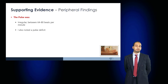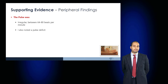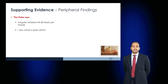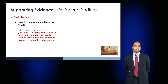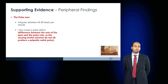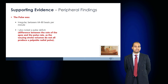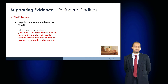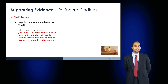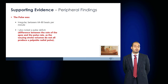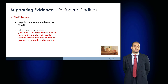Peripherally, the pulse would be irregular and a rate should be calculated — between 65 and 80 beats per minute. You may also note a pulse deficit. A pulse deficit is the difference between the rate of the apex and the pulse rate, because not every stroke volume produces a palpable radial pulse due to the irregular and sometimes very rapid nature of cardiac contraction.